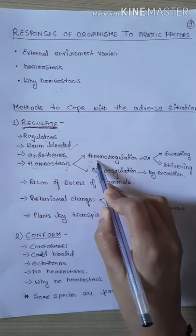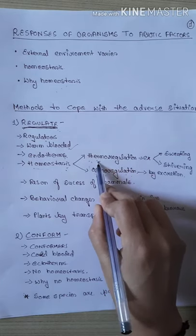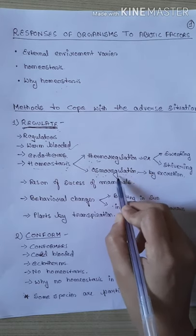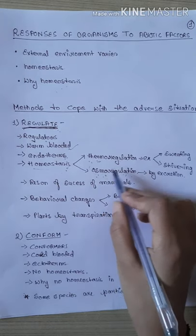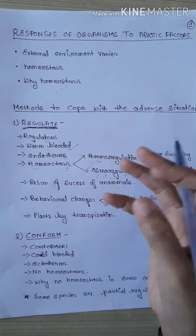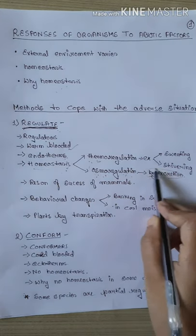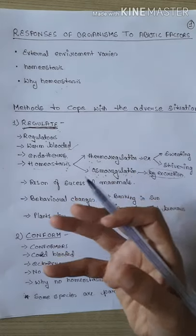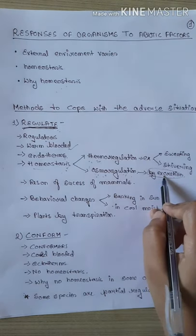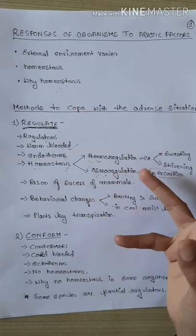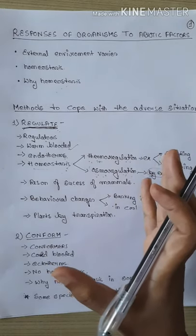Organisms homeostasis kaise karte hain? Do tarike hote hain — ek hota hai thermoregulation aur doosra hota hai osmoregulation. Thermoregulation ka matlab hai maintaining or regulating the temperature. Osmoregulation ka matlab hai maintaining or regulating the osmotic concentration of the body — means body ka water ka concentration, ya salt ka, ya pH ka — yeh maintain karne ke liye organisms excretion ka process karte hain. Kidney ke through ho, ya respiration ke through ho, ya skin ke through — jaise bhi excretion karte hain, jisse excessive water, salt ya acid body ke bahar release ho jaata hai.